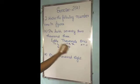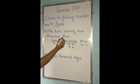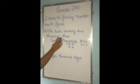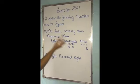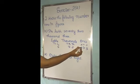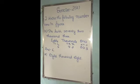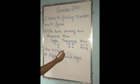Then 72,000: 7 at the ten-thousands place and 2 at the thousands place. Then 3: 3 at the ones place. In the hundreds place and tens place nothing is there, so we have to write 0. So the answer is 6,72,003.